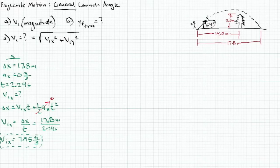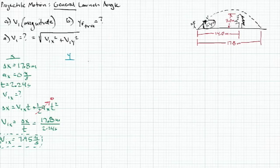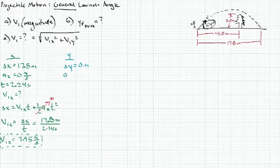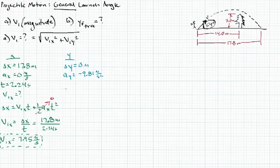Now let's work on the y-components. For the whole trip, total displacement in the y-direction is zero meters — the ball goes up and comes back down to the same level. Acceleration in y is −9.81 m/s². Time is the same as x: 2.24 seconds. We want to find the initial velocity in the y-direction.